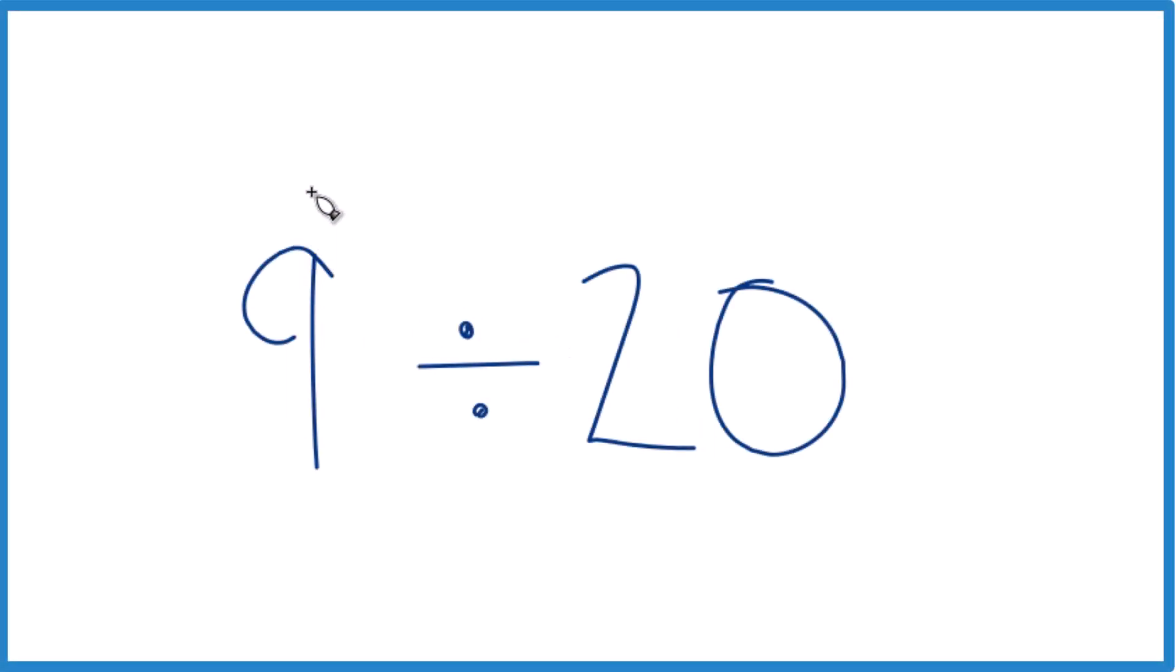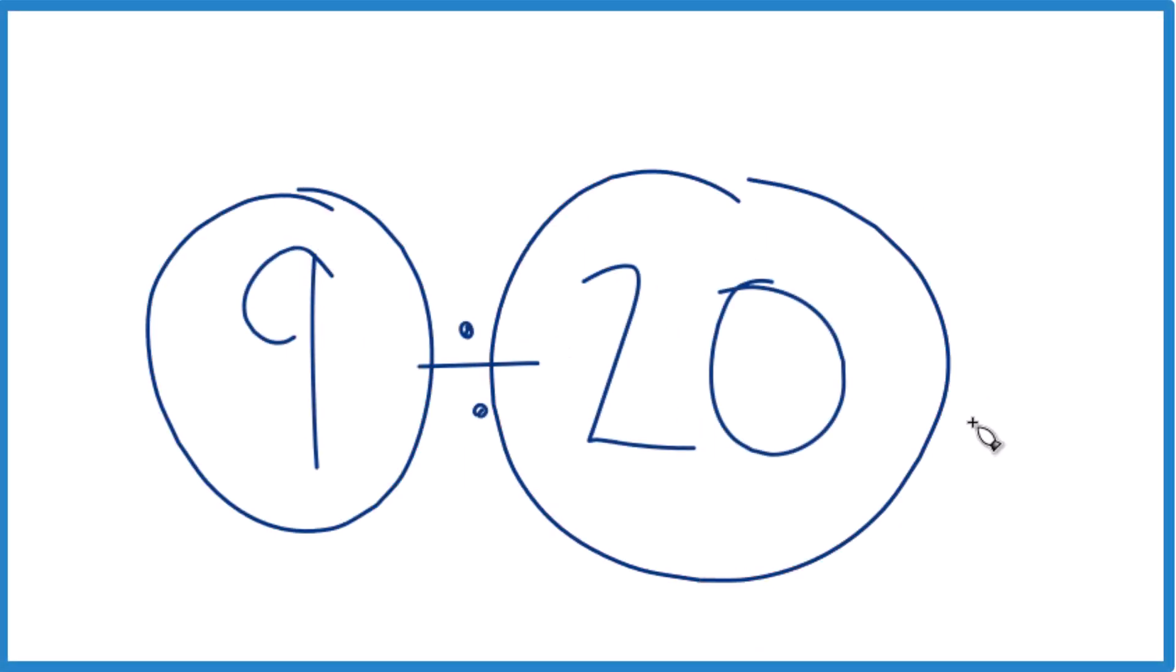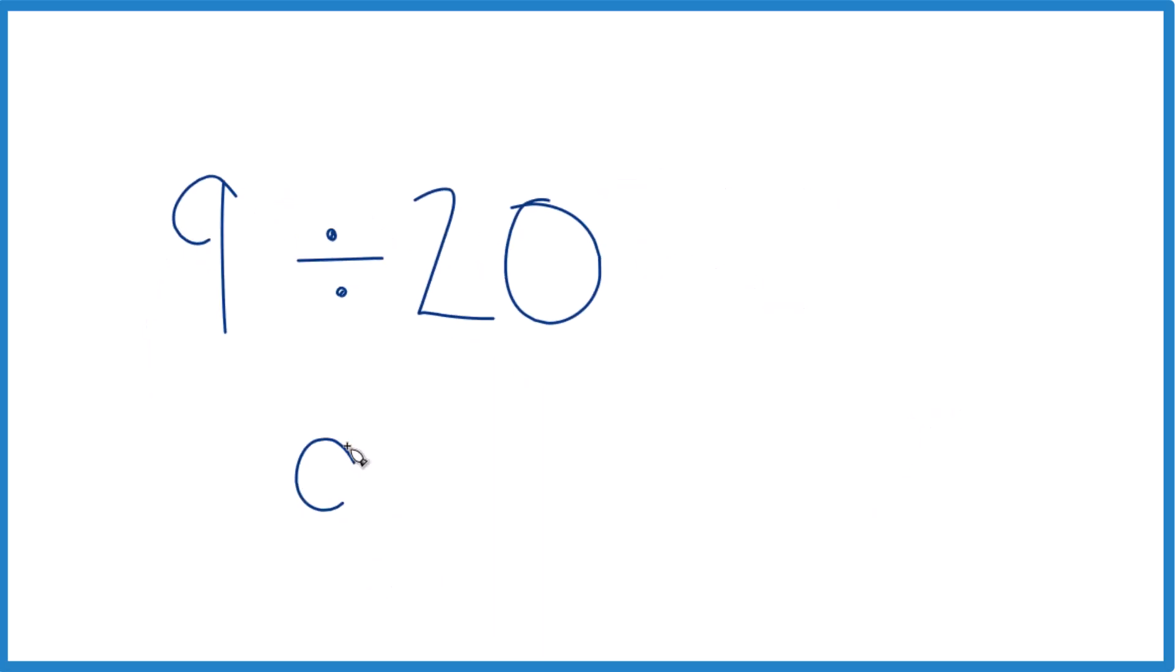So real quick, here's how you divide 9 by 20. And you can think of this as 9 over 20 as well, if you want. That might be a better way to write it.